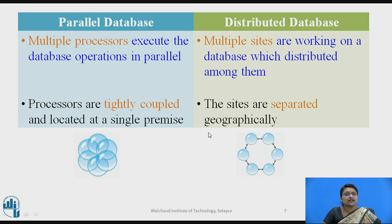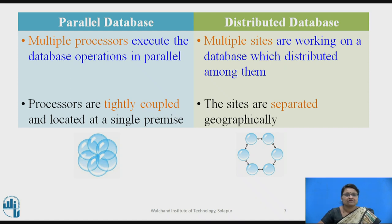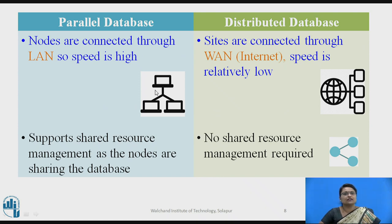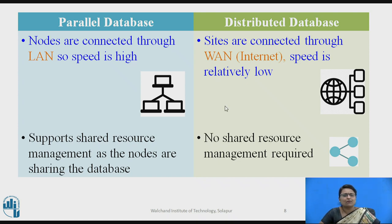In a distributed database, the sites are separated geographically at various locations. The database is stored on every site, and they handle their own data while also working globally. In a parallel database, nodes are connected through LAN so the speed is very high. In a distributed database, sites are connected through WAN via the internet, so the speed is relatively low — depending on internet speed. Parallel databases support shared resources such as disks, processors, and memory, whereas in distributed databases the sites are located separately so there is no sharing of resources.